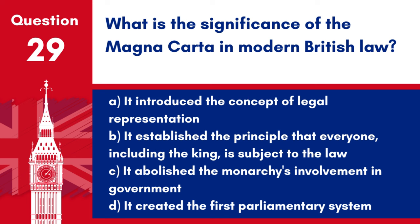Question 29: What is the significance of the Magna Carta in modern British law? a. It introduced the concept of legal representation. b. It established the principle that everyone, including the king, is subject to the law. c. It abolished the monarchy's involvement in government. d. It created the first parliamentary system. Answer: b. It established the principle that everyone, including the king, is subject to the law. The Magna Carta is significant for laying the groundwork for the rule of law in England and, by extension, modern British legal principles.